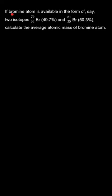The question says: if bromine atom is available in the form of two isotopes — bromine with atomic number 35 and mass number 79 is 49.7% present, and the other isotope of bromine with atomic number 35 and mass number 81 is 50.3% present in nature. We need to calculate the average atomic mass of the bromine atom.